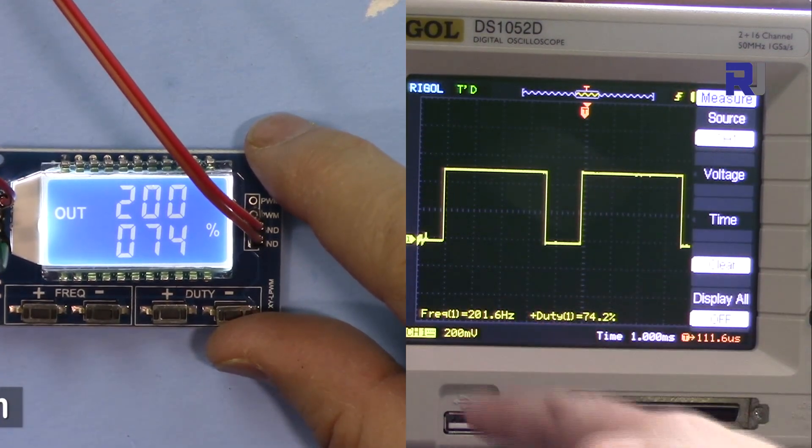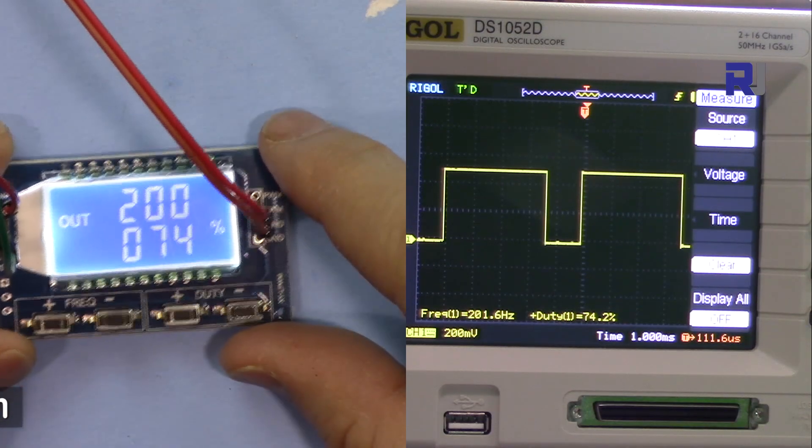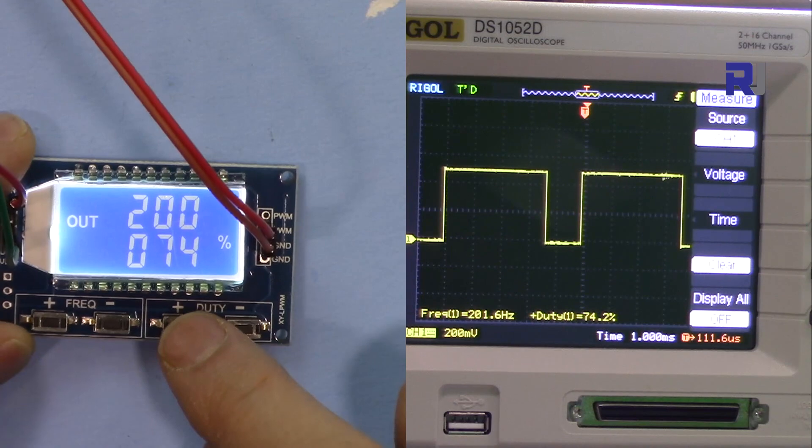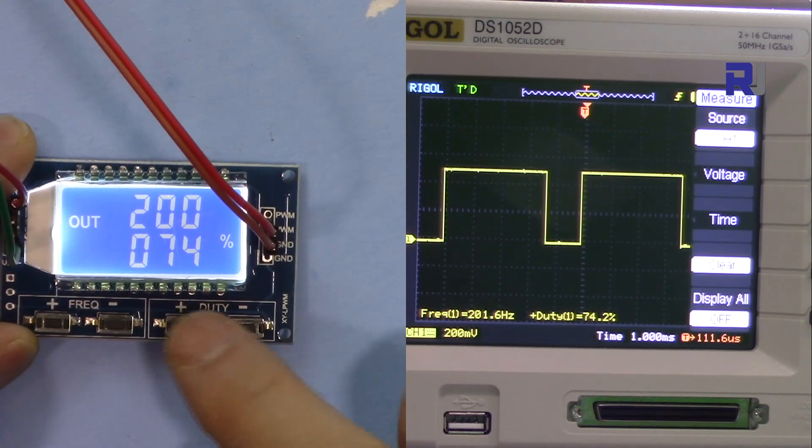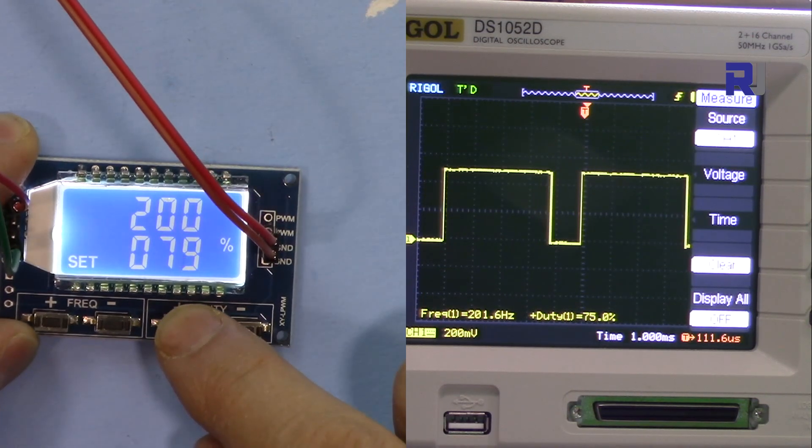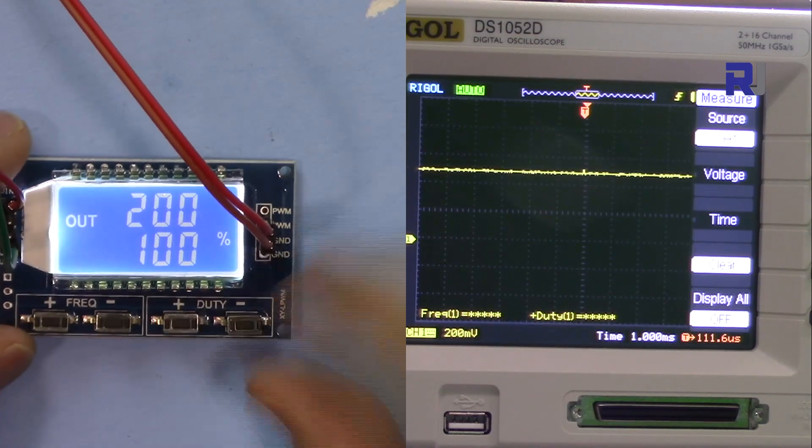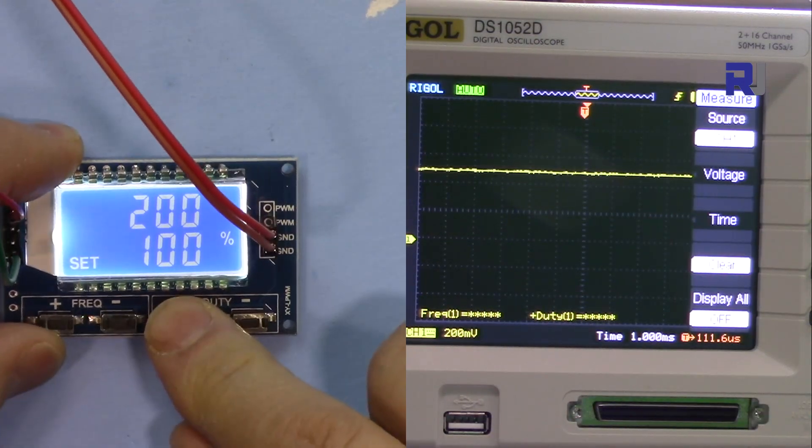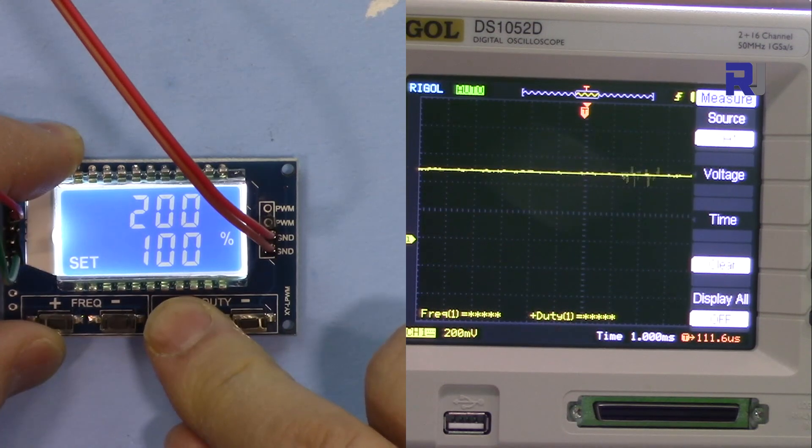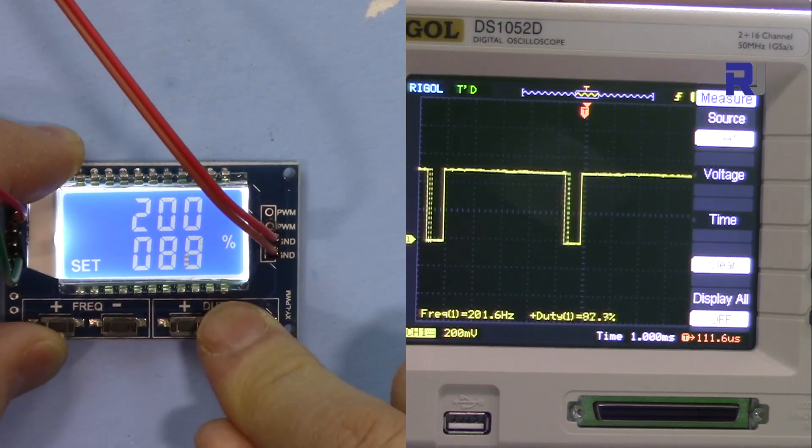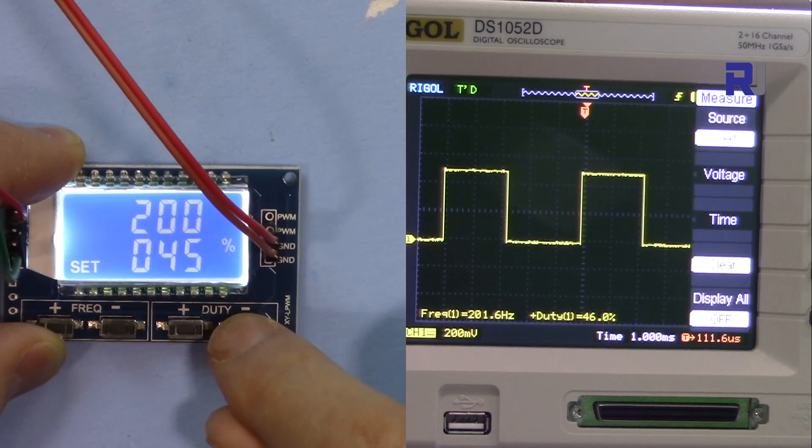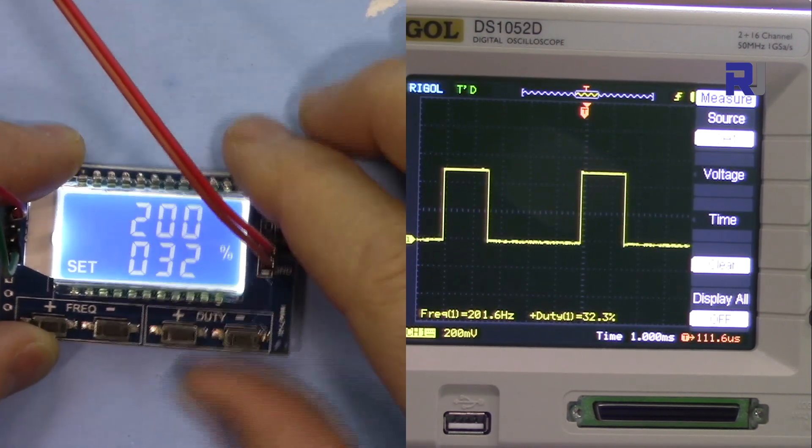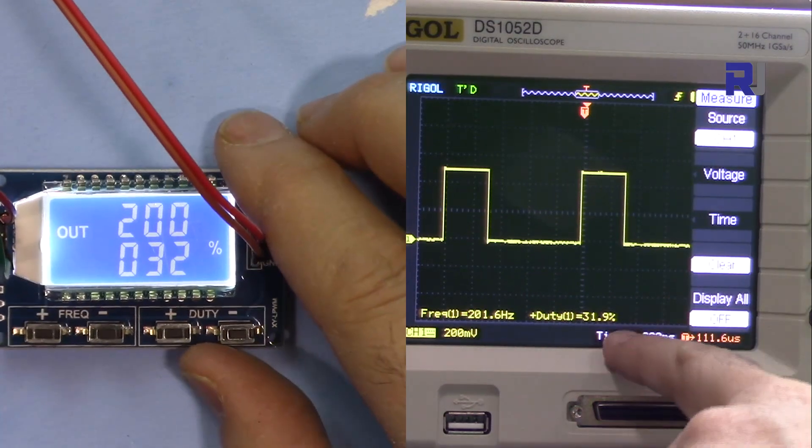Now it's 200 Hertz, 201. Let me change the duty cycle again at this lower frequency. It shows 100% - that is good. 76%, 46%, 32% - that's also showing 32.